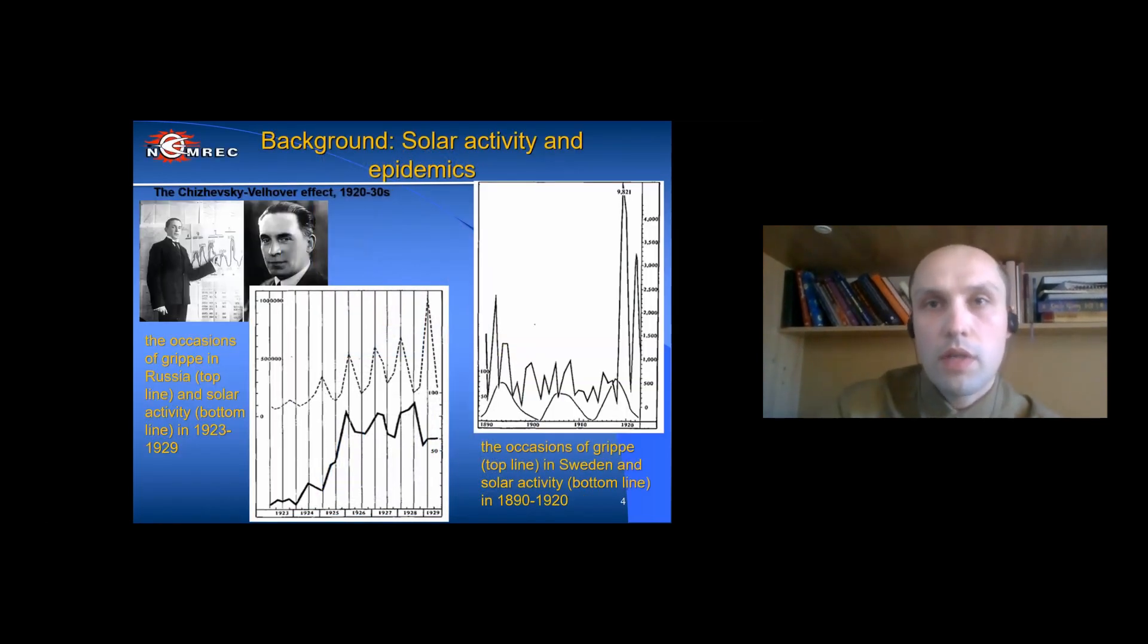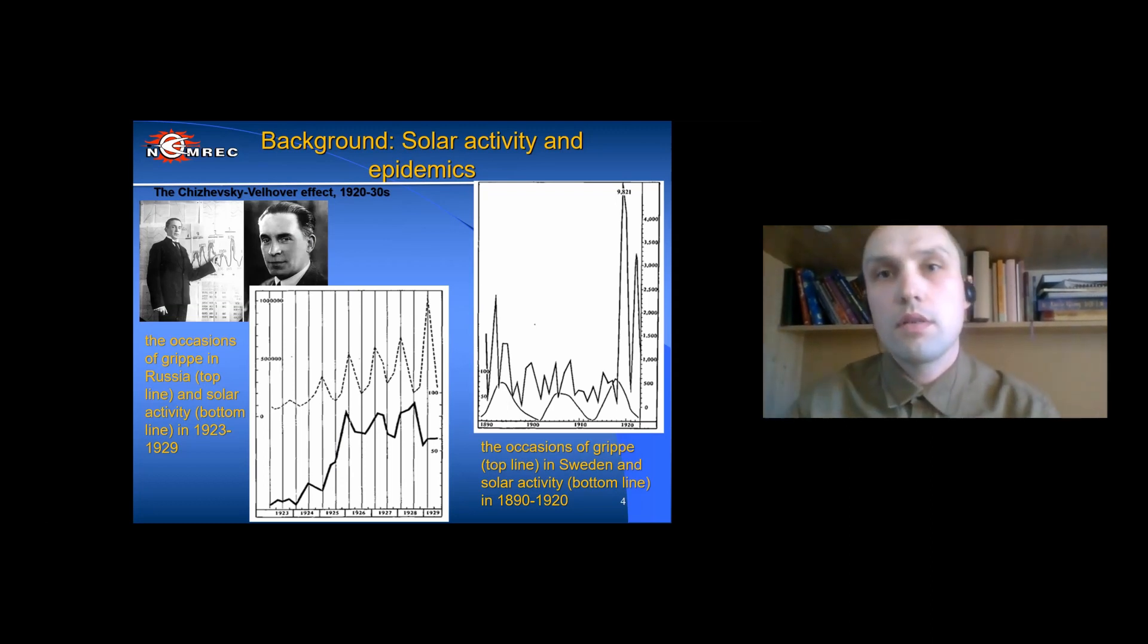Alexander Chizhevsky, a Russian scientist who was the first to show the dependence of many processes on Earth from the Sun. He investigated the dependence of atmospheric variables, epidemics, revolutions and other social processes on solar activity. You can see a graph of flu epidemics in Sweden and Russia in early 20th century and solar activity. As a result, it turned out that the onset of any epidemics occurs 2-3 years before or after the solar maximum. And maybe the COVID pandemic is also connected with this, since it began just at the time of the beginning of solar activity of the 25th solar cycle.